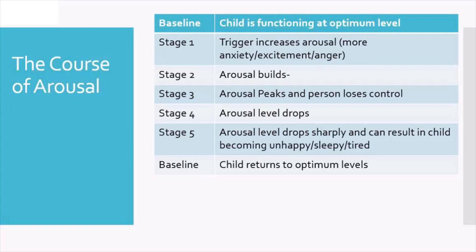This is called the arousal cycle, or the course of arousal — also known as the firework model. It looks at how a child is presenting at a baseline: from the outside looking in, they appear calm and engaged, not showing any level of distress. The firework model helps us think about how that calm child can escalate before coming back down to calm again. In stage one, the match is lit — the trigger or antecedent has occurred — and that has increased an arousal response.